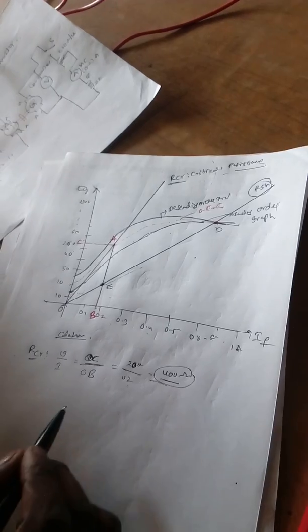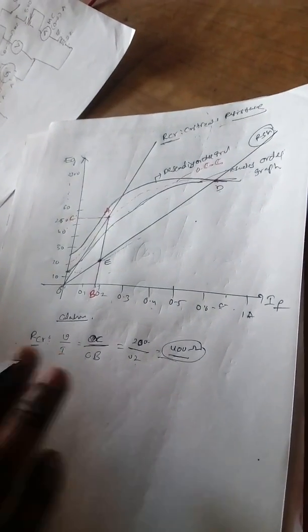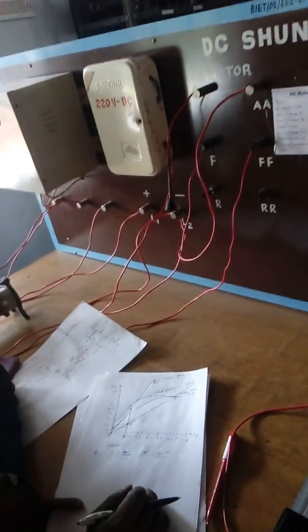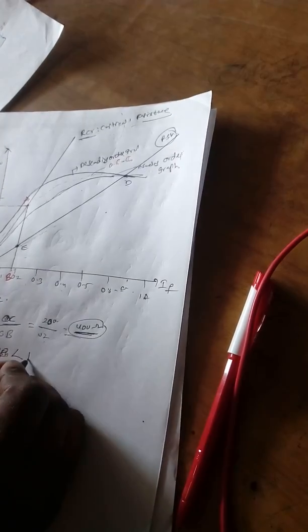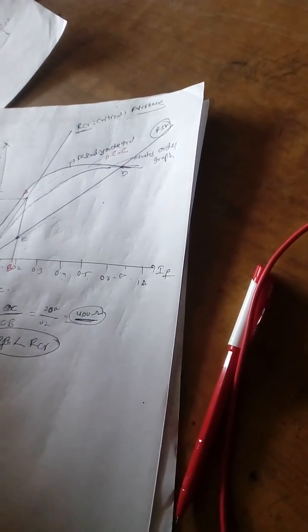What is meant by critical field resistance? This is the resistance above which the generator fails to build up the generated voltage. So you need to operate with a field resistance RF that is less than the critical field resistance. Then only the generator will generate some voltage — above that value it cannot. For example, if the critical field resistance is more than 400 ohms, the generator will not generate voltage.